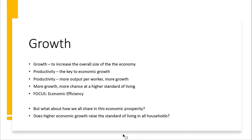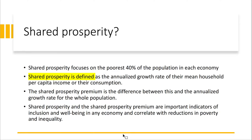Economists are very interested in this because it has huge implications for public policy and our daily lives. When we talk about shared prosperity in the sense of the way the World Bank and the United Nations think about it, we're really talking about focusing in on the poorest 40% of the population in each economy. So if we're trying to share prosperity, we're trying to make sure that a big chunk of the poorest folks — 40% of the population — gets an increase in their mean household per capita income.